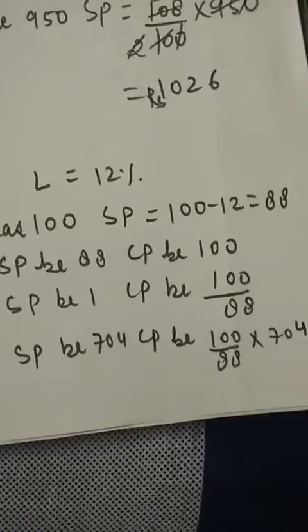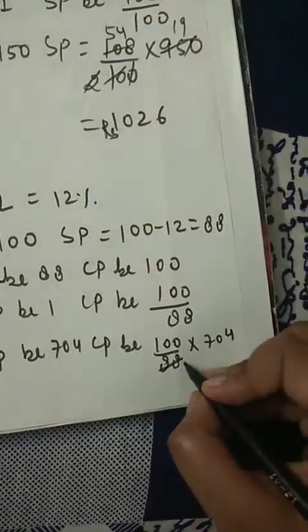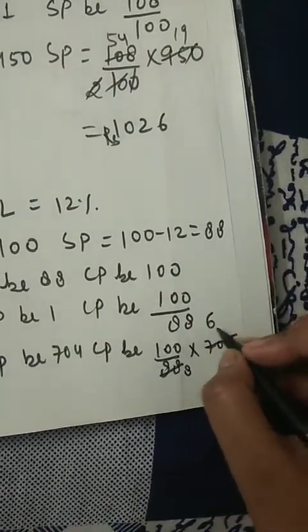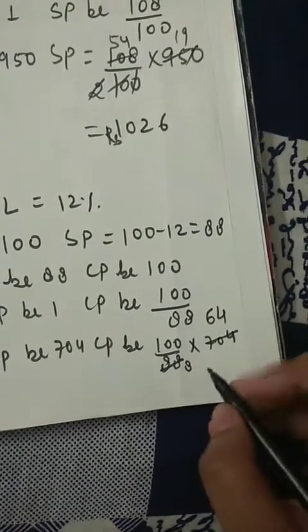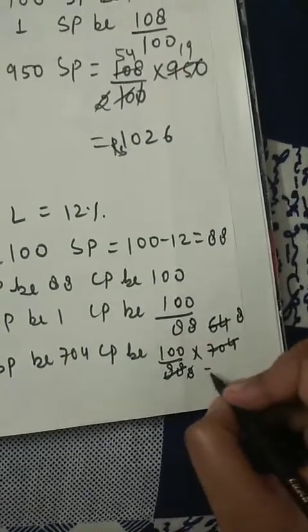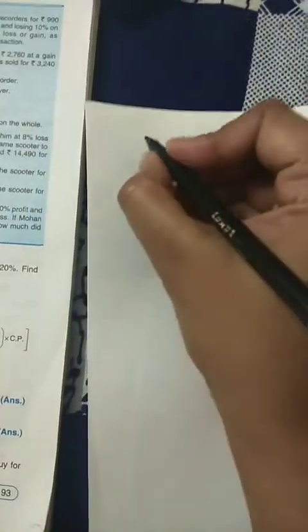Solving the calculation: 88 and 11 cancel, giving 8. Then 11 into 6 is 66, 11 into 4 is 44 — working through the arithmetic, cost price comes out to rupees 800.